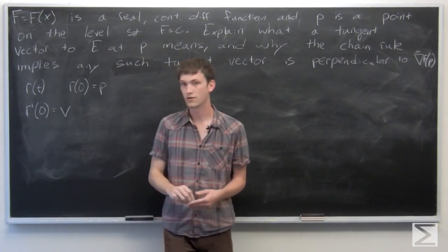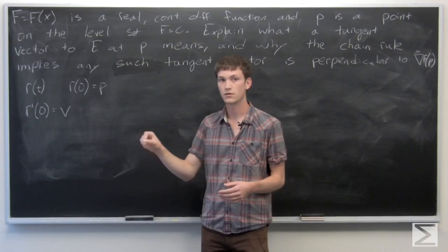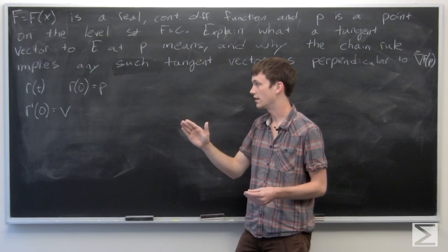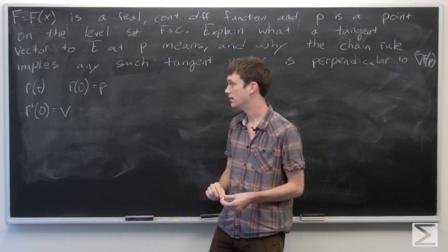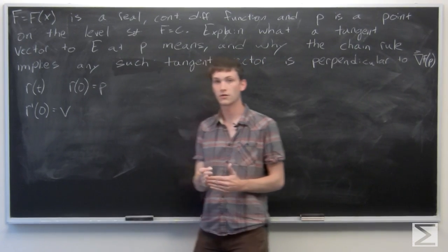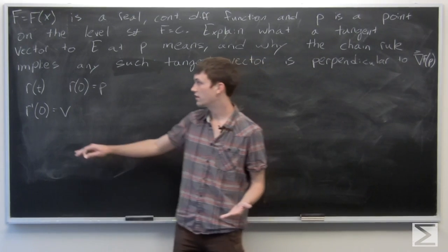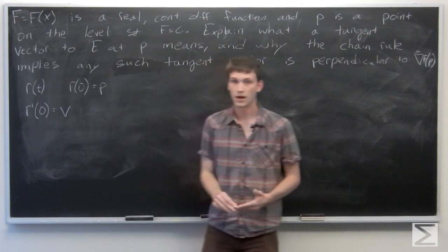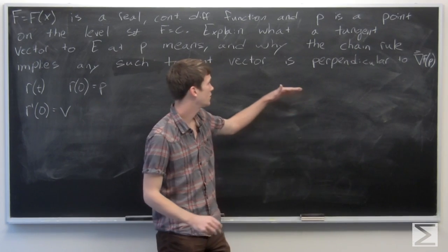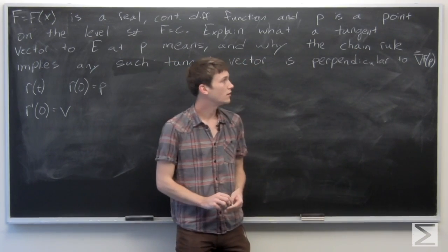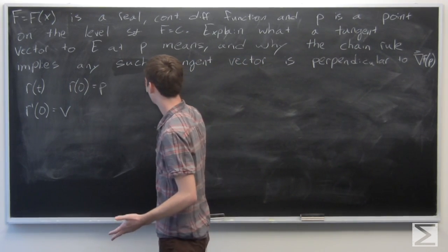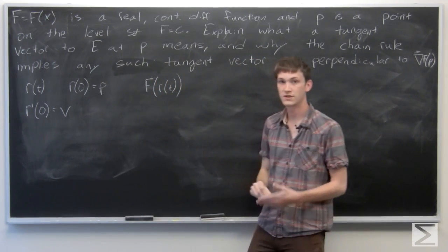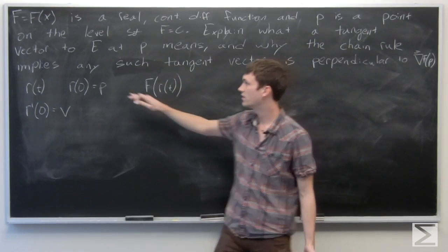So our velocity vector — if a particle is moving along that path on the level set, the velocity it would be moving at at the point p is given by our tangent vector there. Now we want to know how this implies that a tangent vector is perpendicular to the gradient of f at p. We know that f of r of t, where r of t is all within our level set.